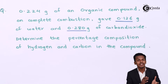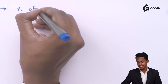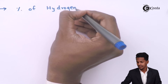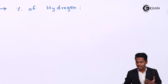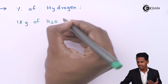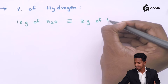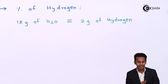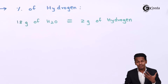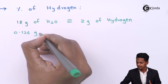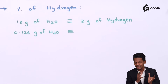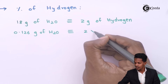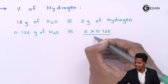First we have to calculate the percentage of hydrogen. We know that 18 gram of water consists of 2 gram of hydrogen. In the given question, we obtained 0.126 gram of water from 0.224 gram of the organic compound. So if we have 0.126 gram of water, we can get 2 × 0.126 / 18 gram of hydrogen.